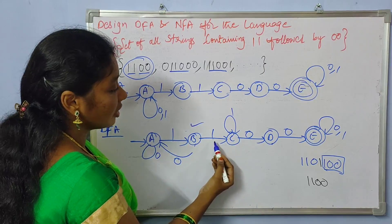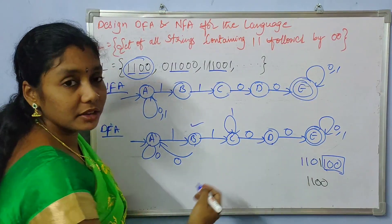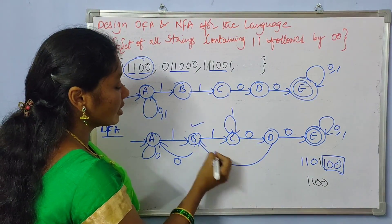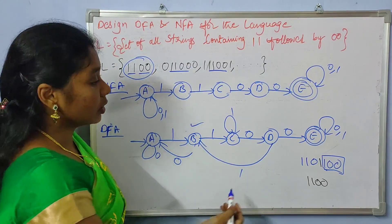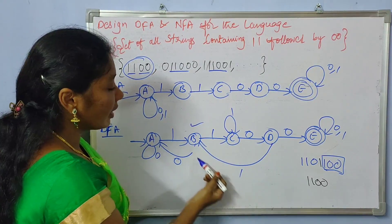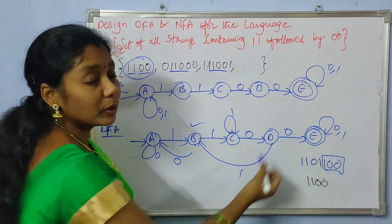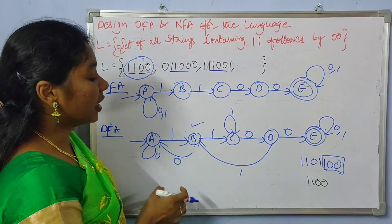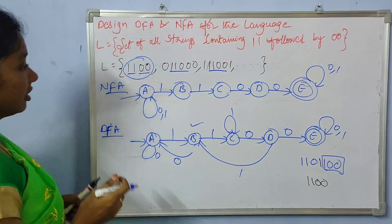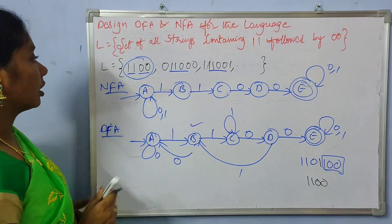Here you can have a transition like 1, 0, 0. If at all you get 1 here, the transition follows 1, 0, 0. Like that you can have a DFA for the given language. Let us check whether both the NFA and DFA are accepting the given set of strings under the language.